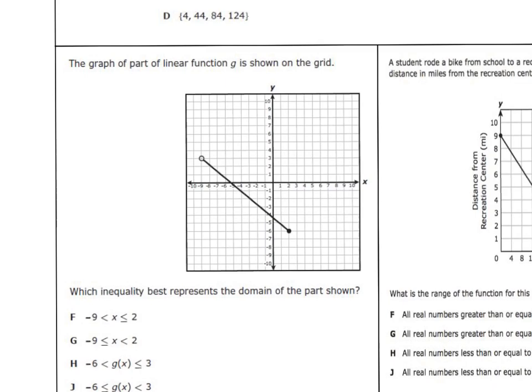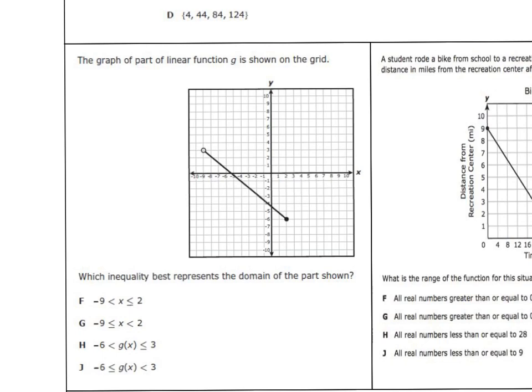On the second problem, it says the graph of part of linear function g is shown on the grid. Which inequality best represents the domain? Now remember domain was our x. So immediately I can go cross off H and J because remember g(x) means the same thing as y. So whenever we look at our domain, we look from furthest left to furthest right. This goes from negative 9 to positive 2.